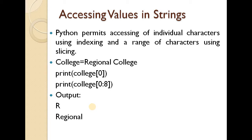Strings permit accessing of individual characters using indexing, and a range of characters using slicing. By indexing, you can print the 0th value — for example, print college[0]. You can also put an index to access individual characters.